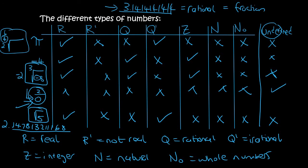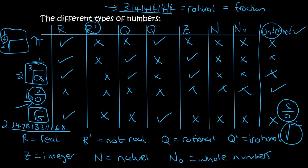And so there we have it — those are the different types of numbers that you need to know. You might have to watch this a few times just to practice. Undefined is when you have a 0 underneath. Non-real is when you have an error from a square root — that's the only non-real we have. So there are only two kinds of errors: 0 underneath means undefined, and an error from a square root means non-real. Thanks for watching.